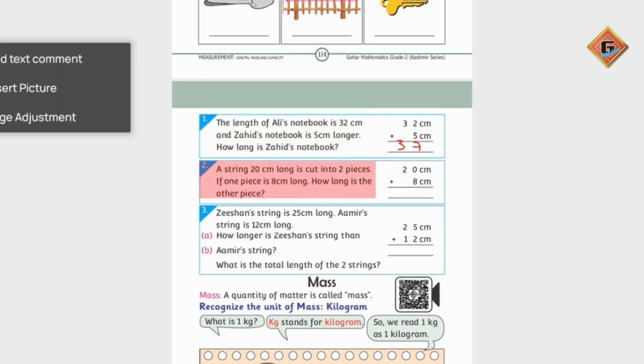A string 20 cm long is cut into 2 pieces. If one piece is 8 cm long, how long is the other piece? So, 20 minus 8 is 12 centimeters.